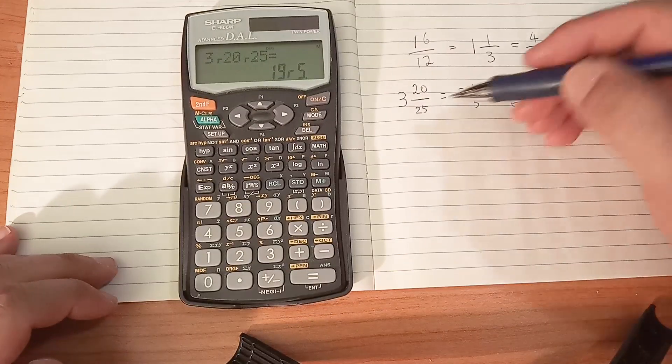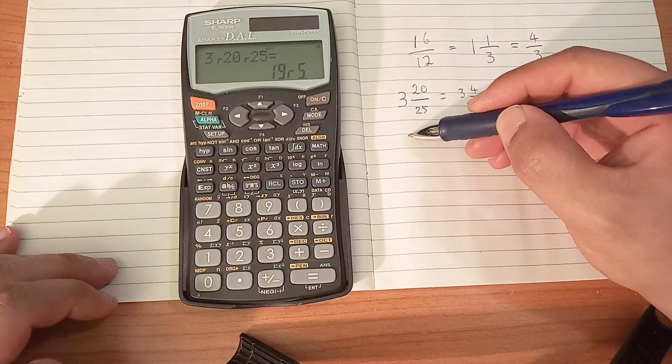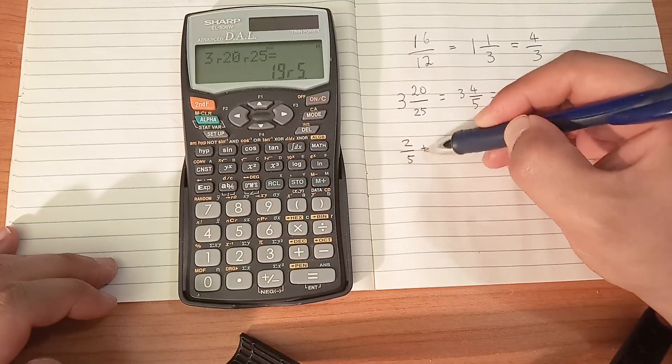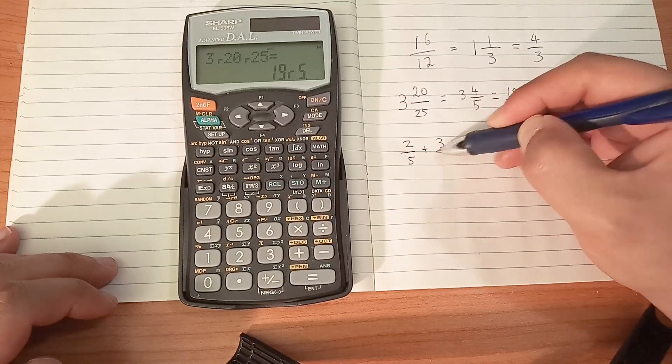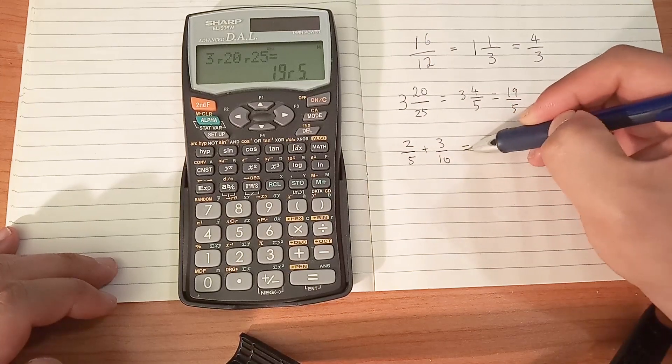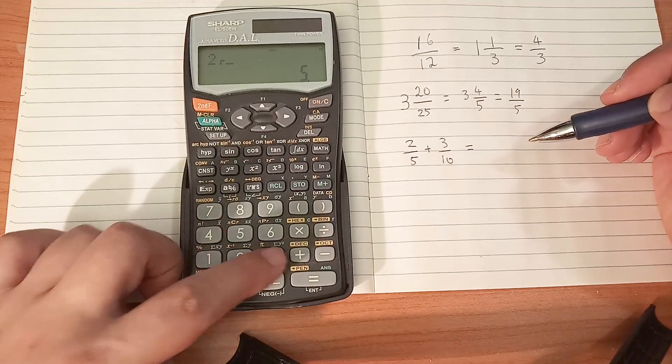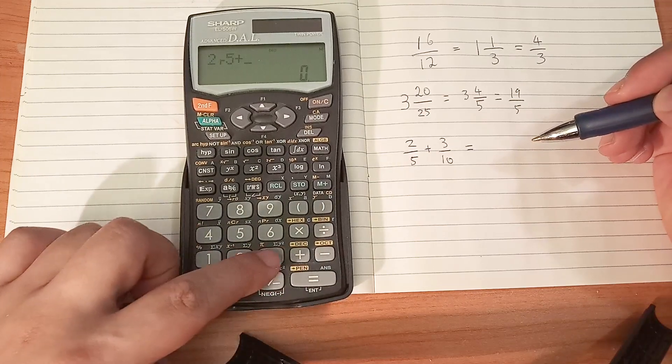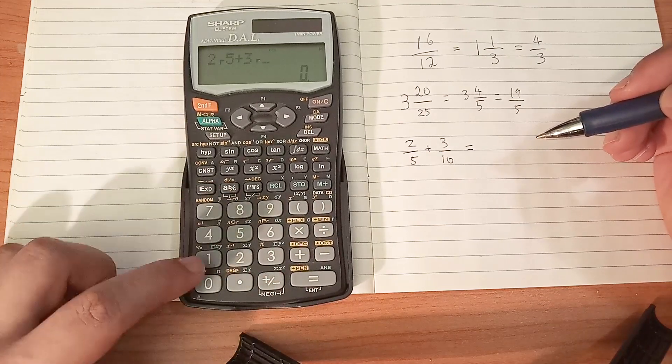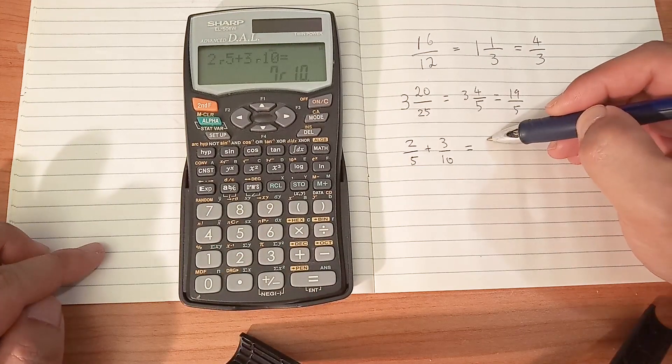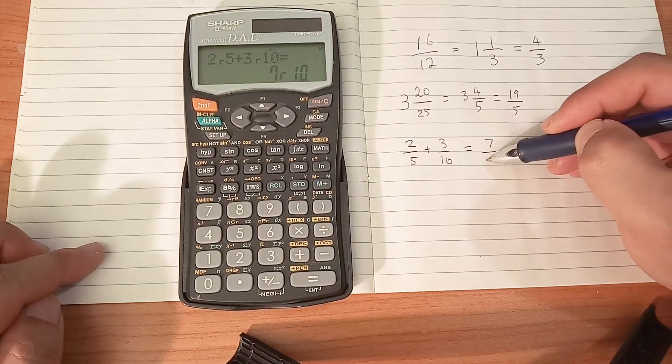Now let's try adding fractions. Let's do 2 over 5 plus 3 over 10. So you enter 2 over 5 plus 3 over 10, and it gives us 7 over 10, which is correct.